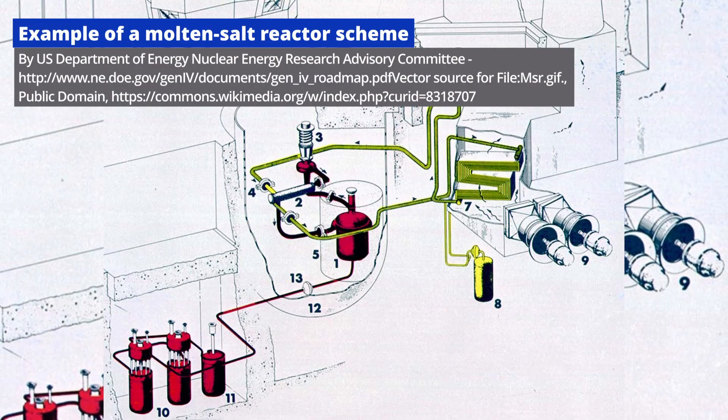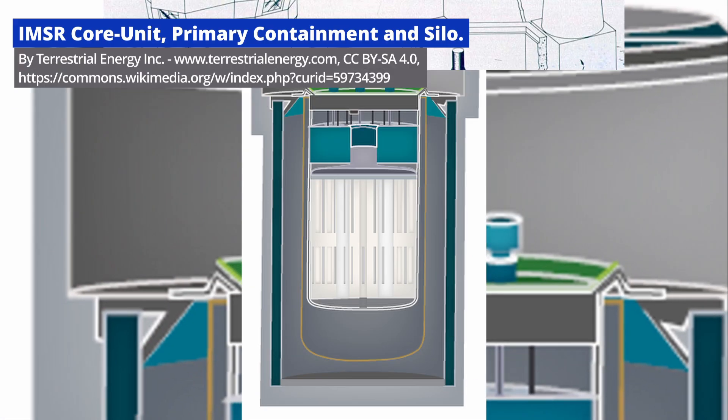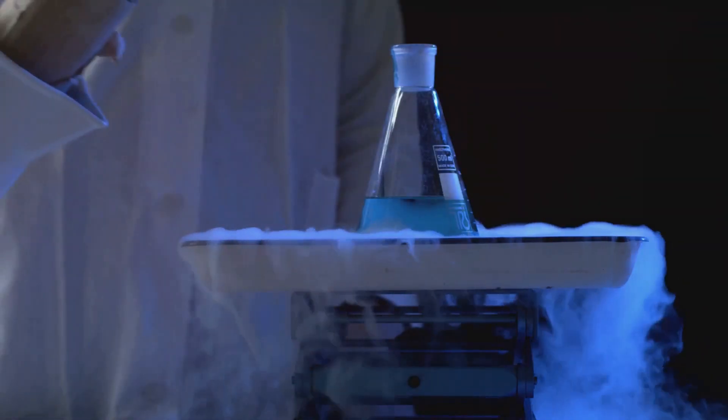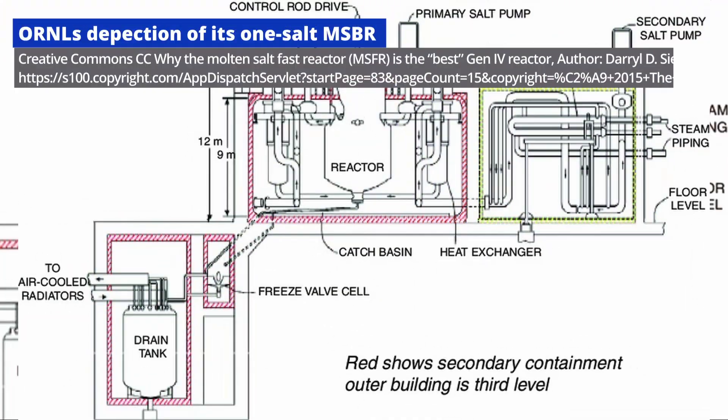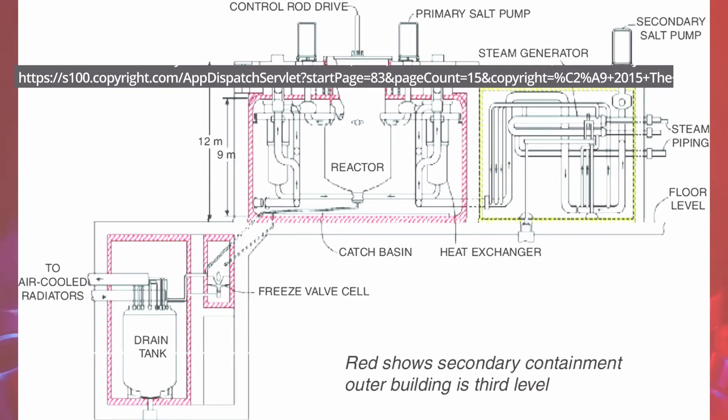Molten salt reactors are especially suited for thorium because the liquid salt helps to stabilize the reactor, preventing meltdowns and enabling efficient heat transfer. This design also allows for continuous fueling, meaning you can add thorium while the reactor is running.